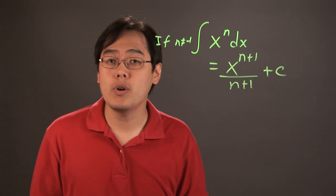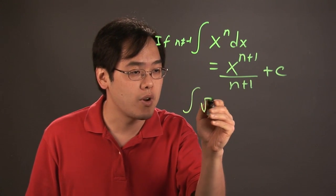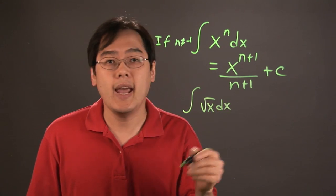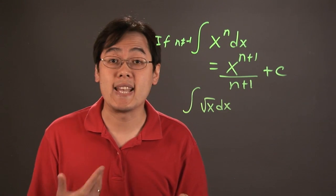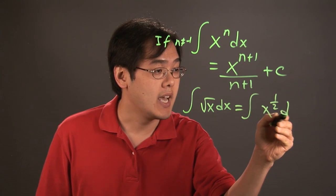Now, where it becomes important is if you wanted to integrate, let's just say, square root of x. If you have the integral of square root of x dx, any radical you always have to rewrite as an exponent no matter what. So this will be integral of x to the 1 half dx.